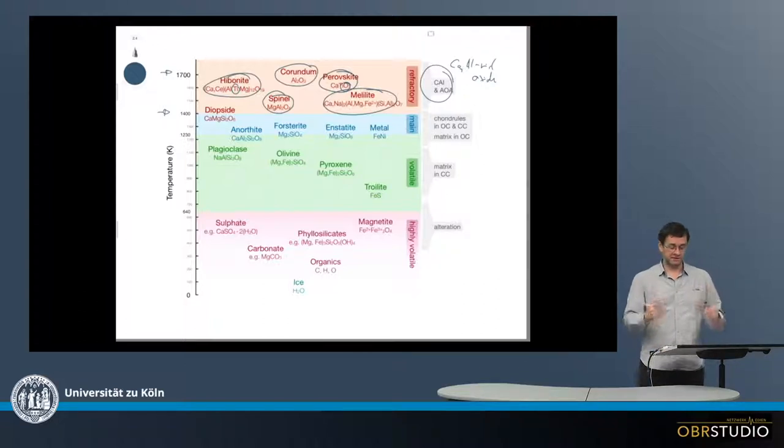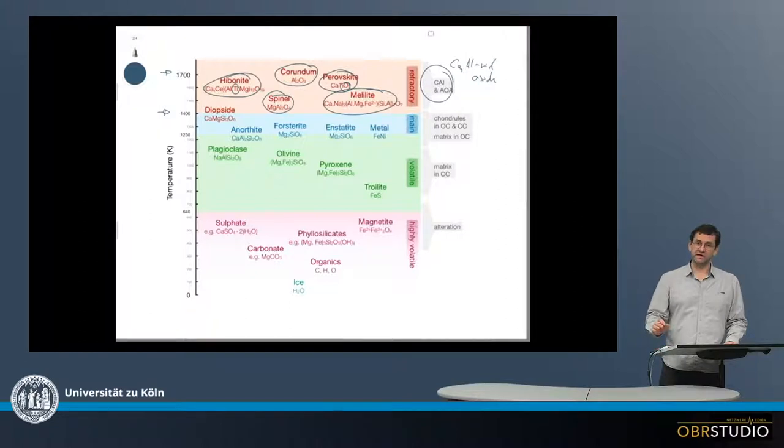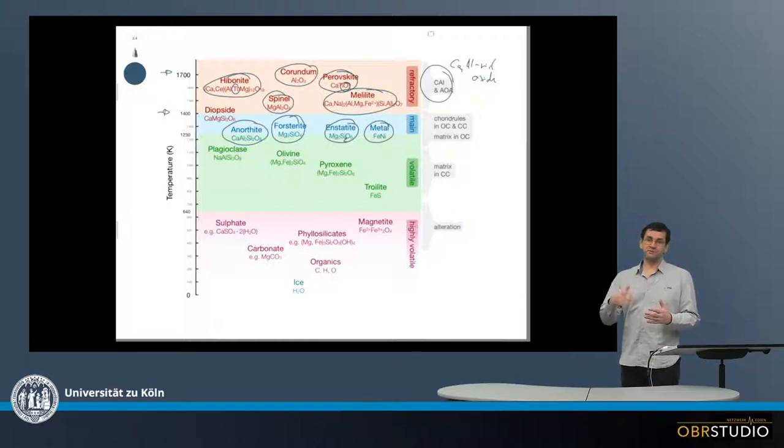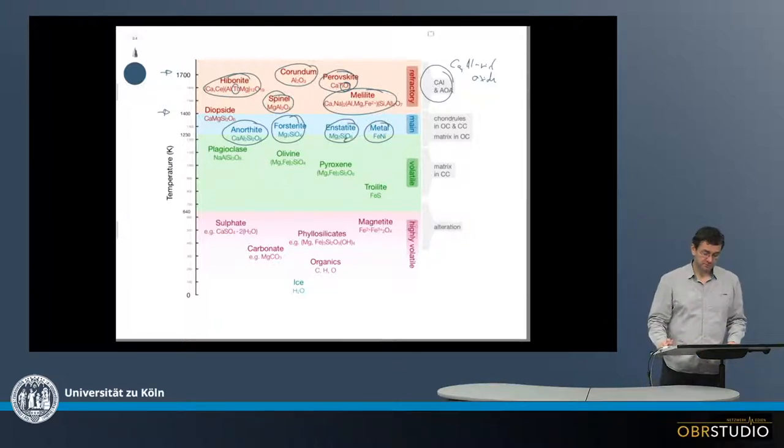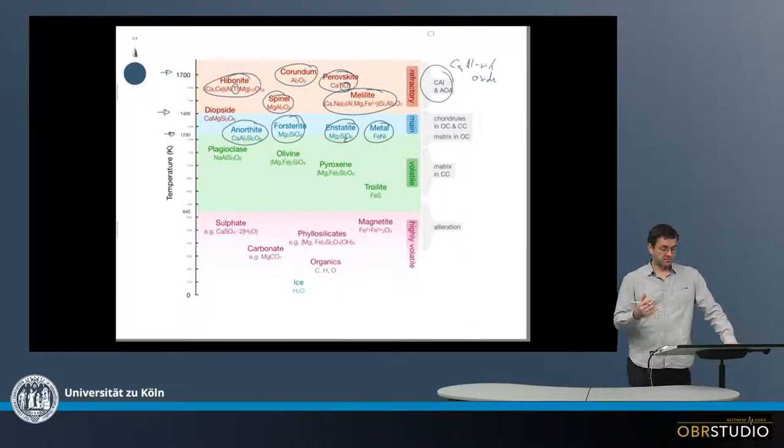After this temperature, next in sequence are the main elements and minerals. The main elements are magnesium, silicon, and iron. What's forming now is forsterite, enstatite (which should be Si2O6 here), then metal and anorthite, which is a calcium feldspar—the high-temperature feldspar. All this forms in a smaller window, between about 1230 and 1400 Kelvins.